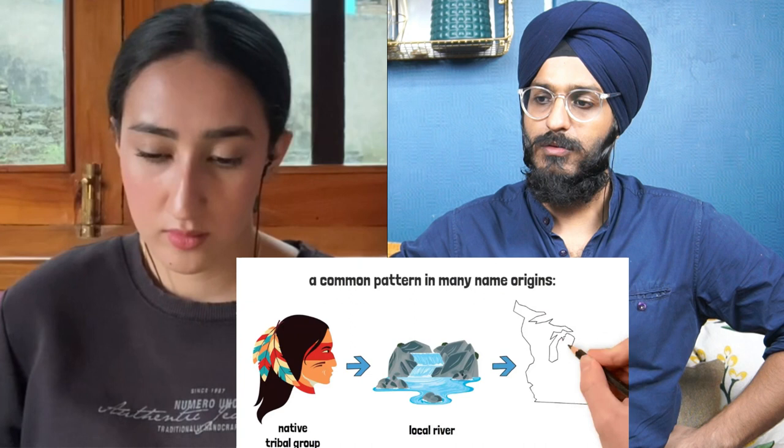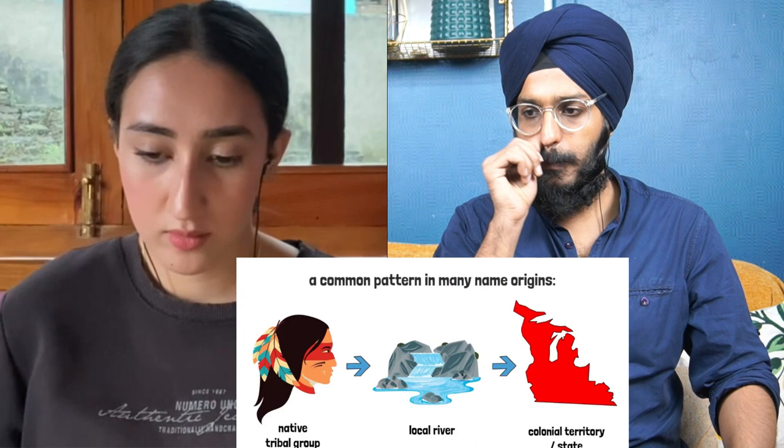There is a somewhat common pattern: the initial origin in a native tribal group led to the naming of a local river, then a colonial territory sharing that name, and then the state. Let's go one by one and understand the known or predicted origin of each state. Time stamps are posted in the description if you want to skip ahead.